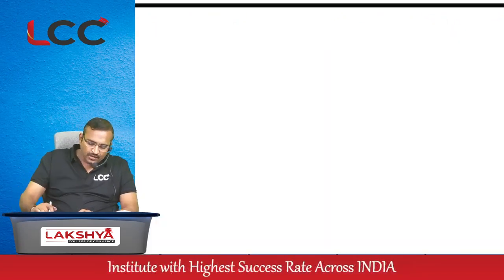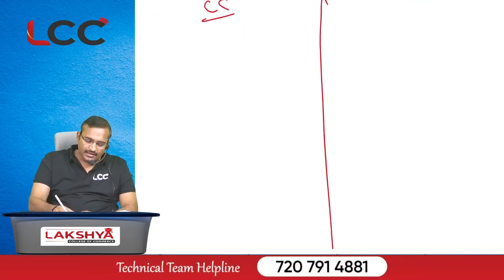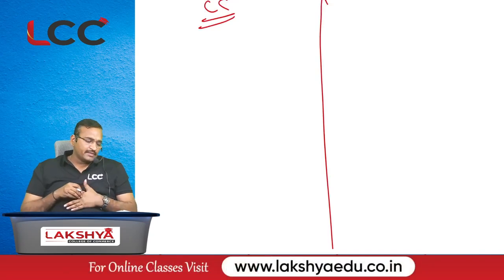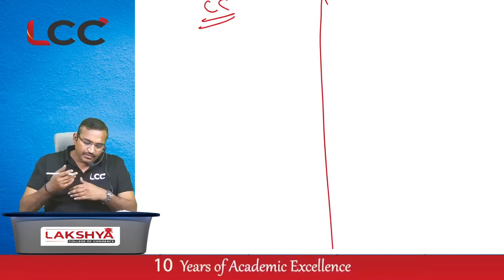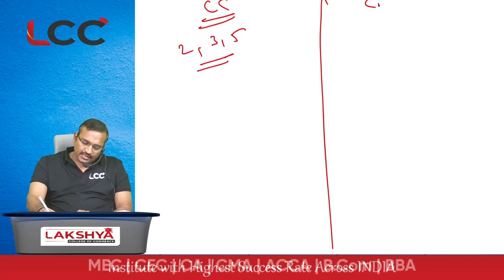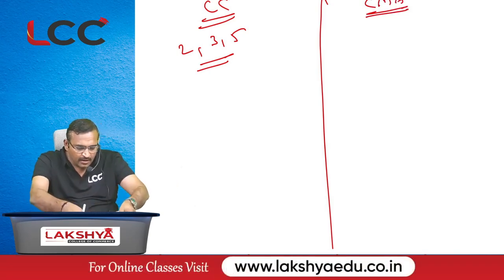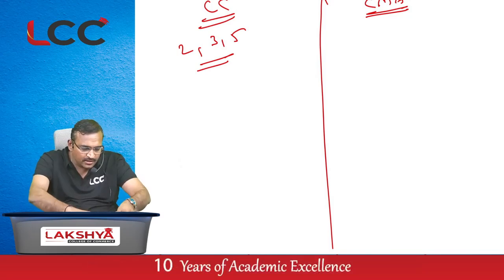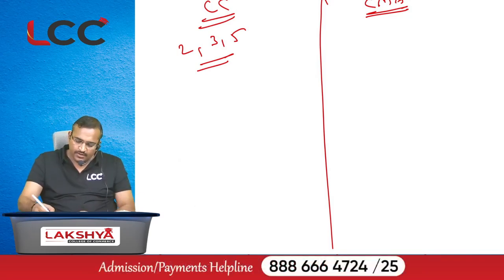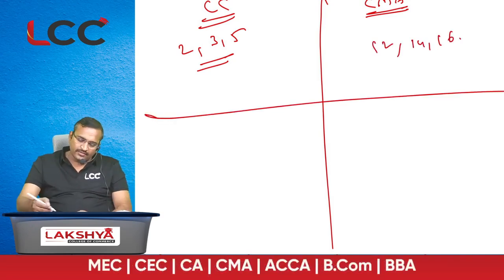The next chapter is contract costing, which is a very very important chapter from the examination point of view. From our lecture material: question number 2, question number 3, and question number 5. From CMA study material, the important questions are question number 12, question number 14, and question number 16.